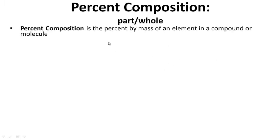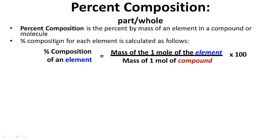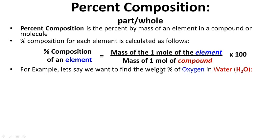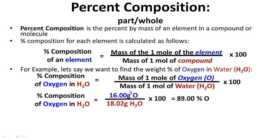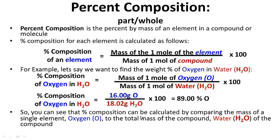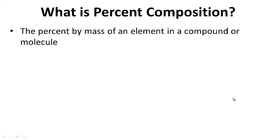Now, percent composition. Percent composition is the percent by mass of an element in a compound or molecule. It is calculated as follows: the mass of one mole of the element divided by the mass of one mole of the compound, times 100. For example, the weight percent of oxygen in water is the mass of one mole of oxygen (16) divided by the mass of one mole of water (18.02), times 100, which gives us 89% oxygen. Pause this and write your notes on what percent composition is.